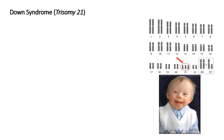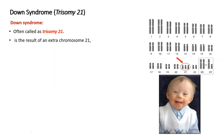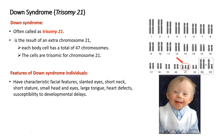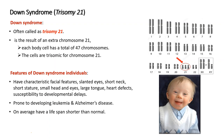Down syndrome, also called Trisomy 21, results from an extra chromosome 21, giving each body cell 47 chromosomes instead of the normal 46. Features include characteristic facial features, slanted eyes, short neck, short stature, small head and eyes, large tongue, heart defects, and susceptibility to developmental delays. Individuals are also prone to develop leukemia and Alzheimer's disease, have a shorter lifespan, and are mostly sexually underdeveloped and sterile.